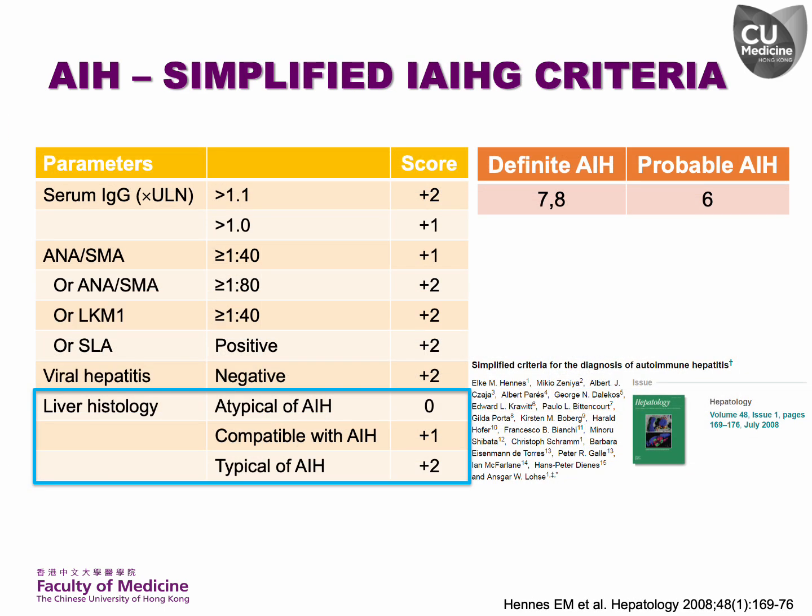The simplified international autoimmune hepatitis group scoring system was developed to provide a more practical tool for diagnosing autoimmune hepatitis that can be easily used in daily clinical practice. This system is less complex and time-consuming compared to the revised scoring system while still maintaining diagnostic accuracy. Histology remains one of four key criteria of this simplified system.